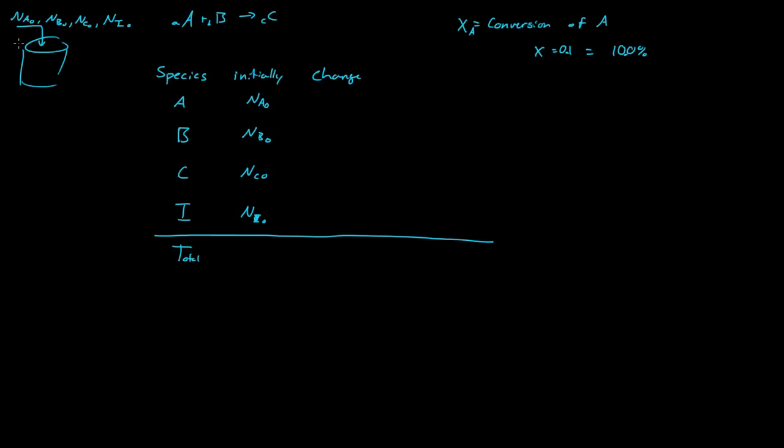So if we initially have some initial amount of A and we multiply it by the conversion X A, so N A naught times X A, that will give us the change.